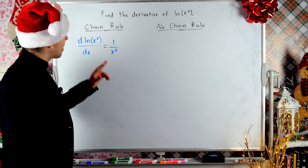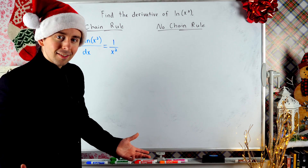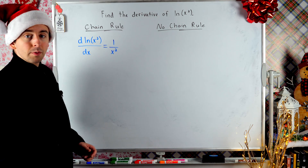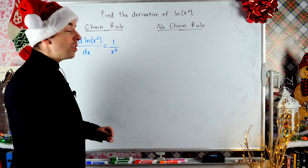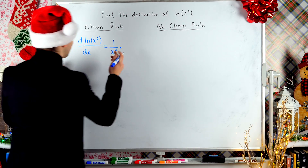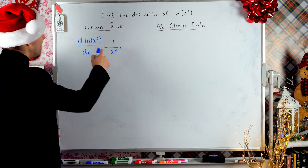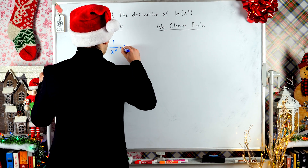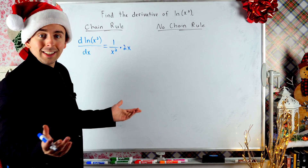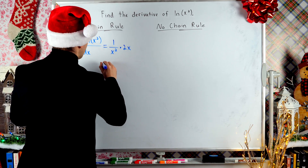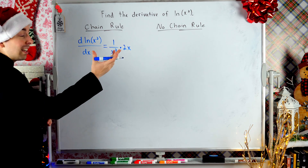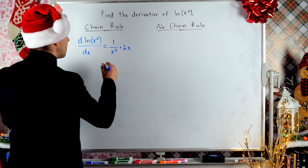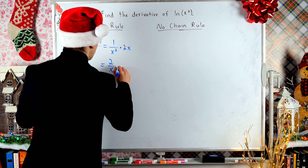Remember, the derivative of natural log isn't just 1 over x — it's 1 over the stuff inside. The stuff inside is x squared, so that derivative is 1 over x squared. Then we just have to multiply by the derivative of the stuff that's inside. The inside function is x squared, so by the power rule, its derivative is just 2x. So we have 1 over x squared times 2x. We're basically done — just a little simplification.